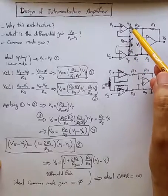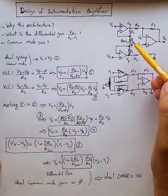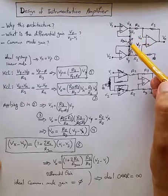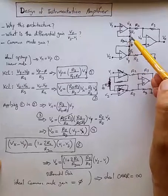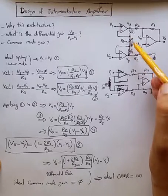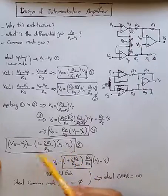So we can say Vx minus Vy is just R1 plus Rgain plus R1 divided by Rgain times the voltage across Rgain, which is V1 minus V2. That's summarized here.